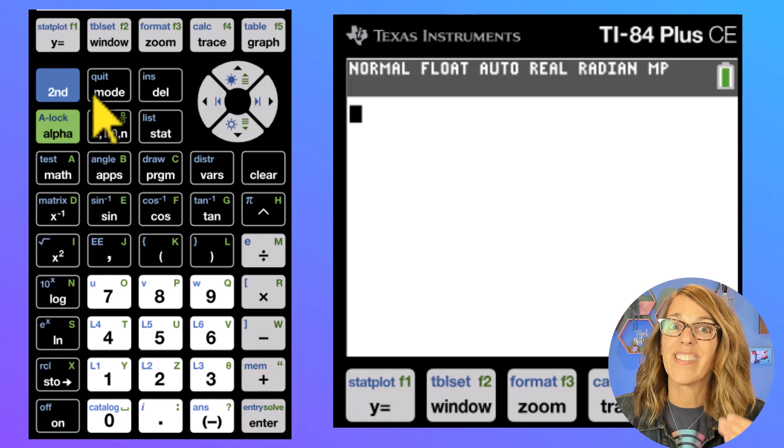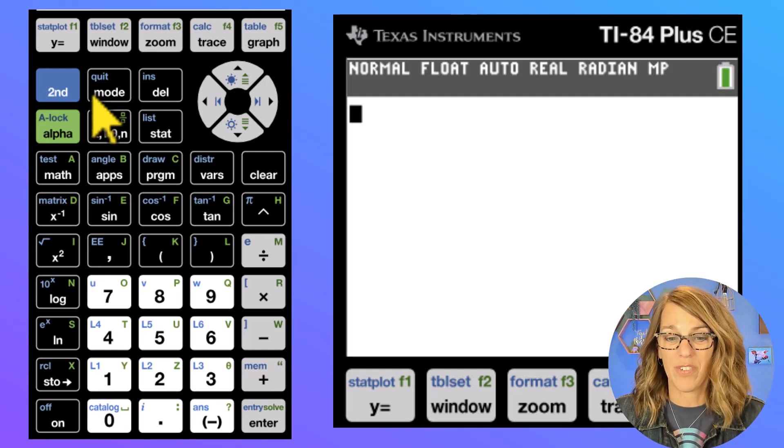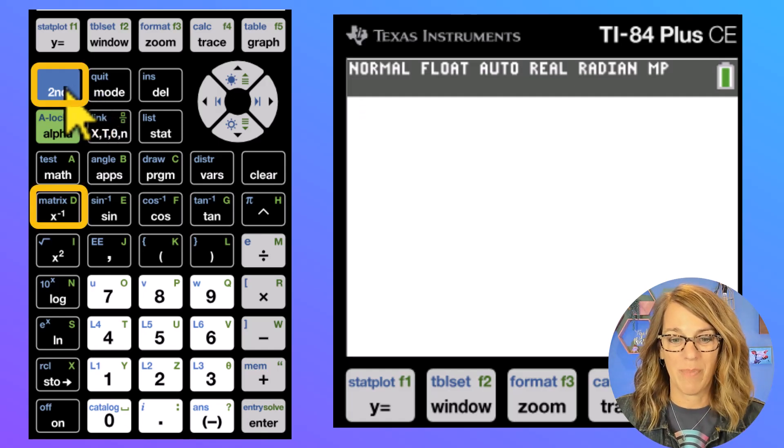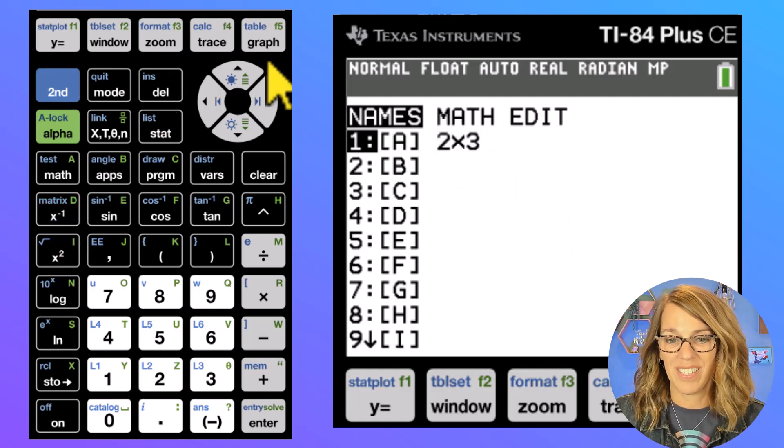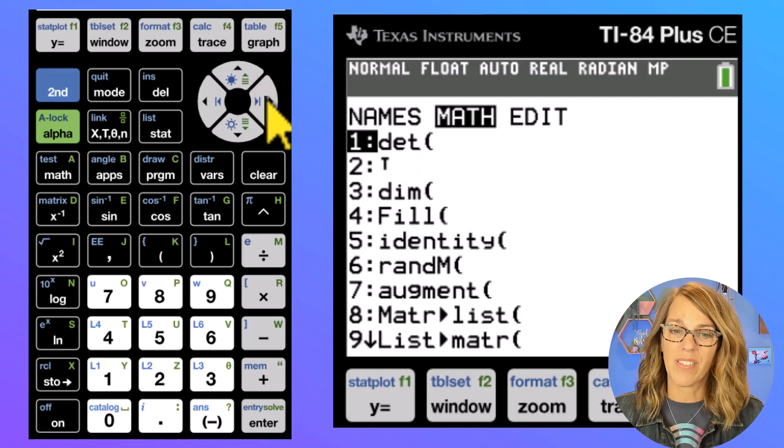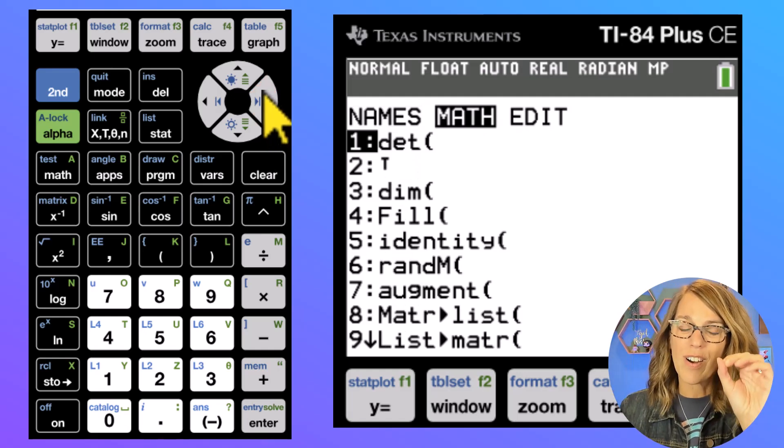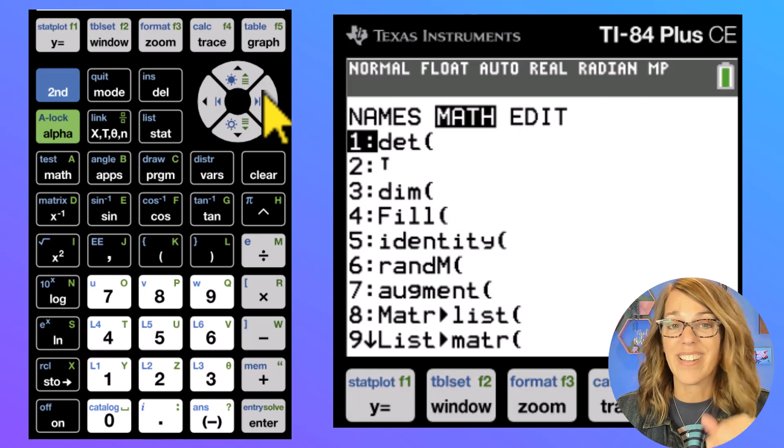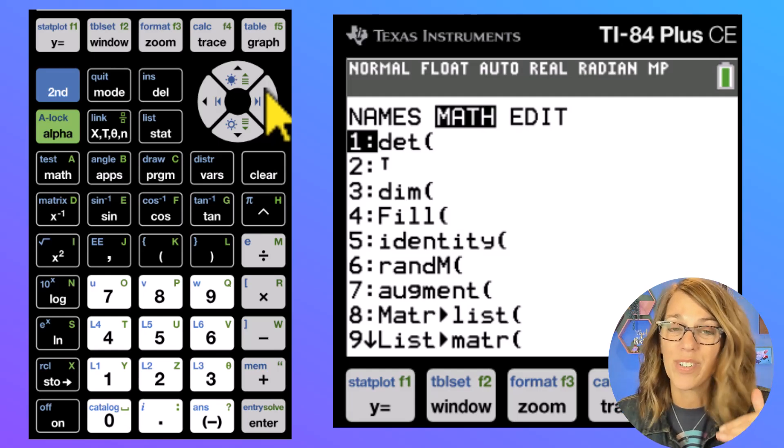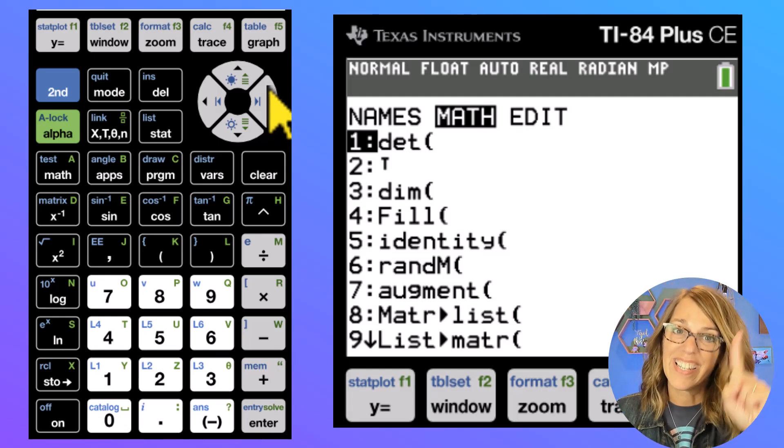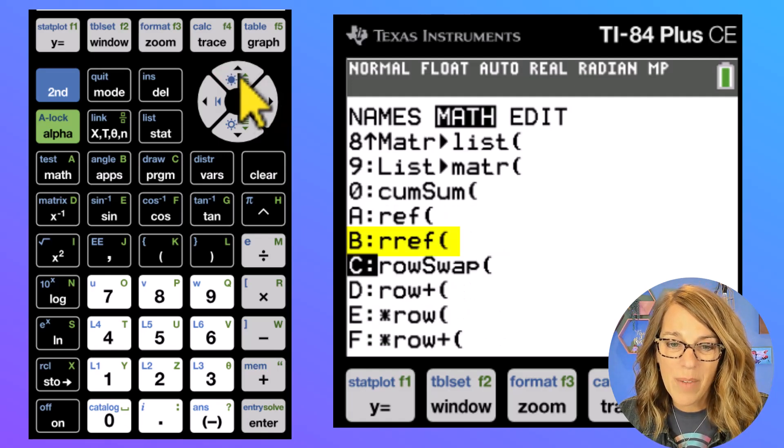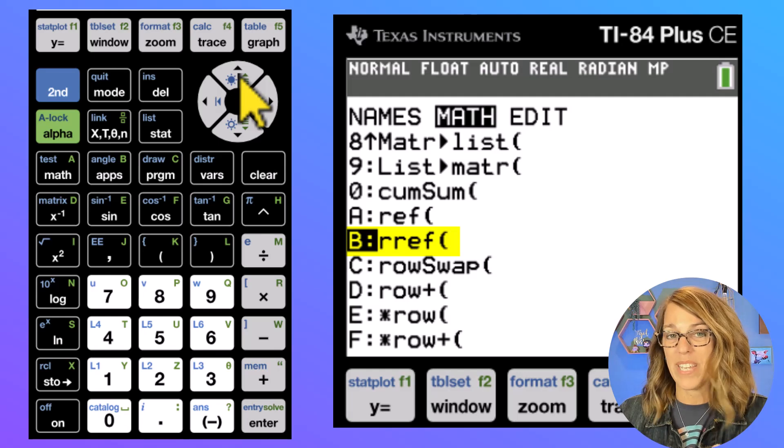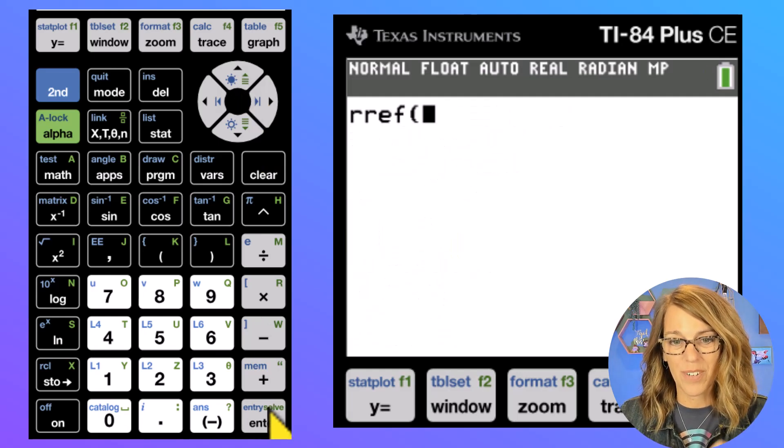I want to find the solution using my matrix. So back to our matrix menu, second matrix. But this time I want to do some math, right? I want to solve this. Arrowing over to math, I am looking for R, R, E, F. It is not here. I know it's down towards the bottom of that list. Let's arrow up. So I'm going to arrow up and arrow up until I see there it is, R, R, E, F. And then we're going to hit enter.